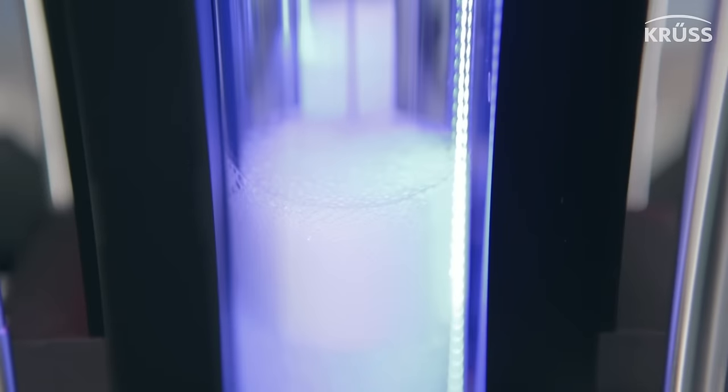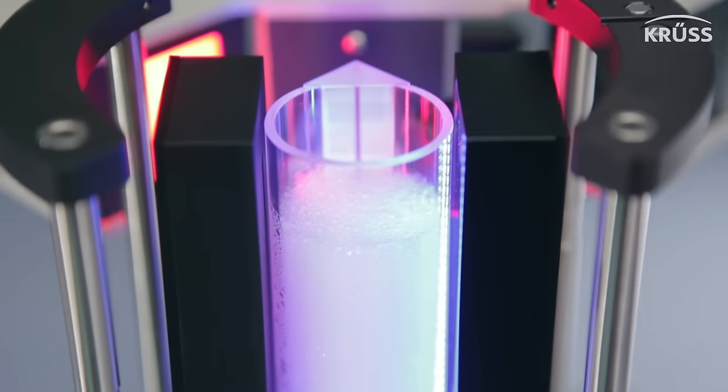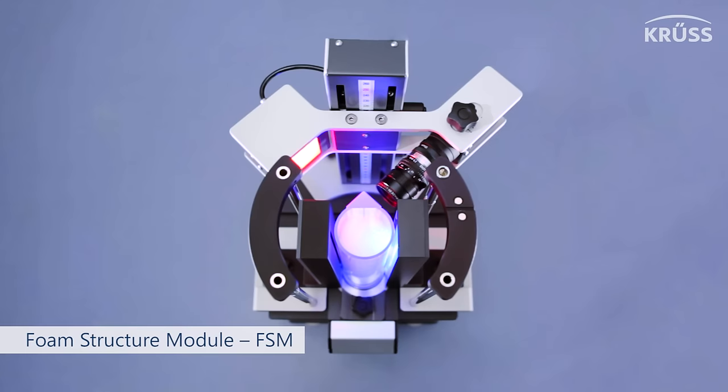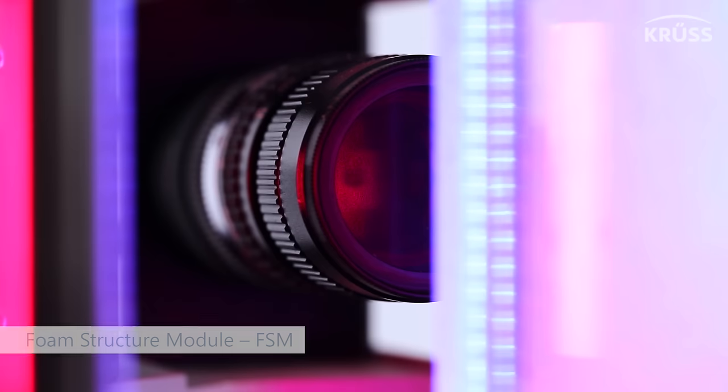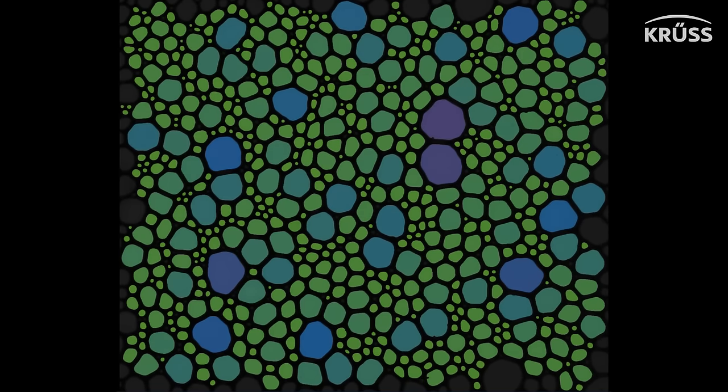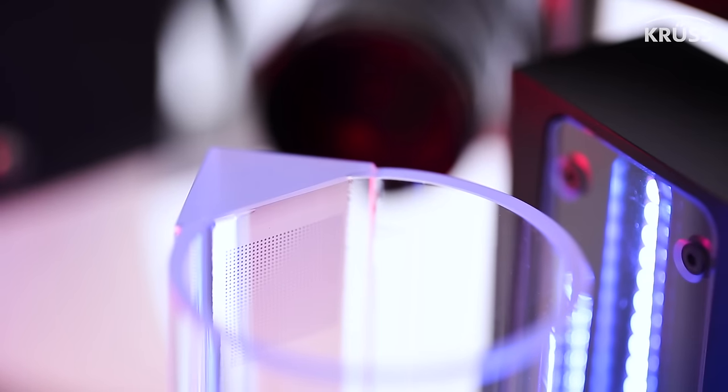But the most innovative part of the instrument is a technique to analyze the actual foam structure itself. The DFA 100's Foam Structure Module, FSM, uses a microscopic camera and special prisms to generate a perfectly sharp live picture, which is analyzed by the software. Paired with our calibration grid, we can measure the bubble size in absolute values, even down to 50 micrometers.